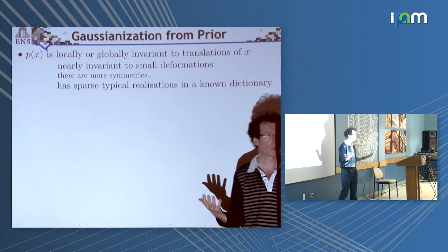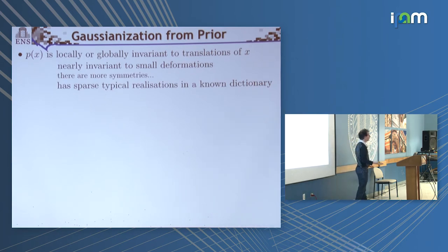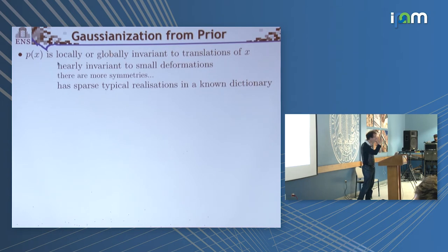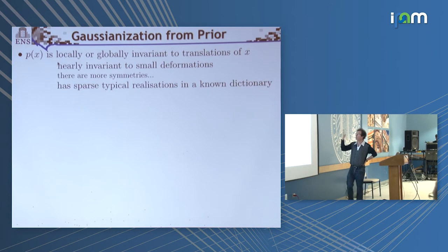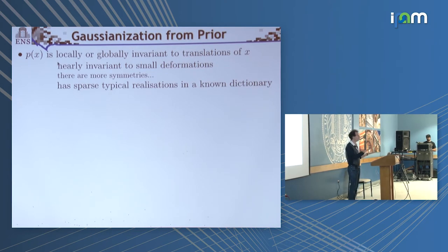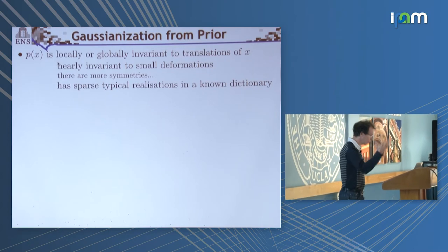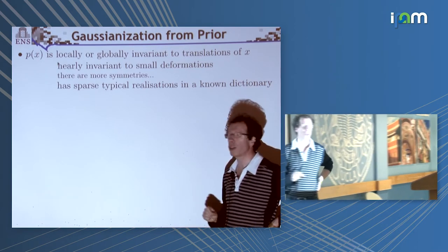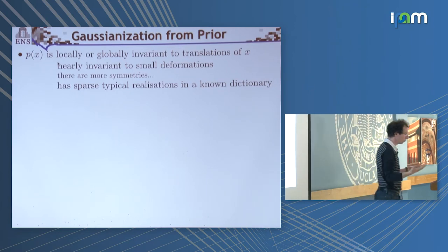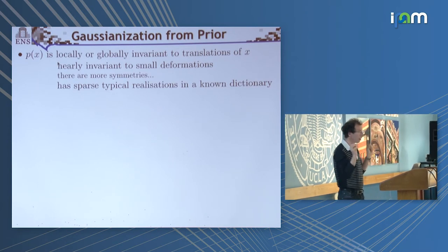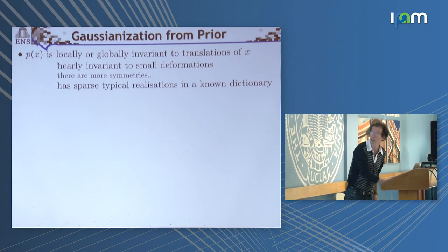What kind of prior information do we have on the probability distribution? Very often, we know that p of x is either locally or globally invariant to translation, and very often nearly invariant to local deformation — you deform an image, it looks like itself. Other type of information: typical realizations of x — typical images produced by your random process — are sparse in a known dictionary. So we are going to use prior information about sparsity. That's the prior information.